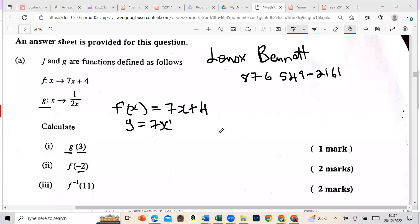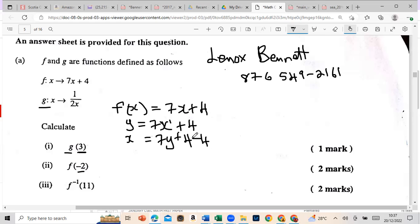So we have 7x plus 4. Now we're going to interchange x for y and y for x. Anywhere with x we're going to put y, and anywhere with y we put x. So there was x and now we have 7y plus 4. Now we're going to solve for y, we're going to make y the subject of the formula. We have plus 4, we take the inverse so minus 4.